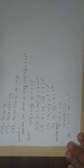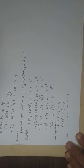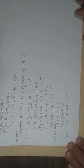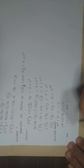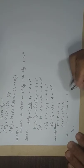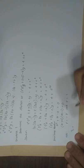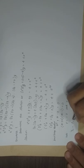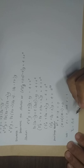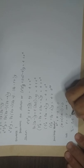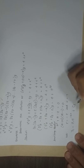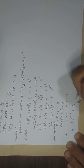The complementary solution to this equation is: yc = c₁·e^(−2z) + c₂·e^z.